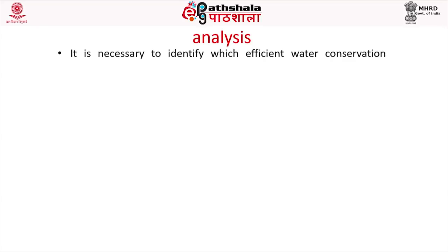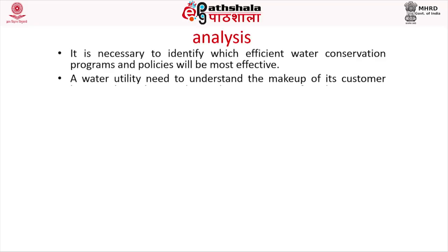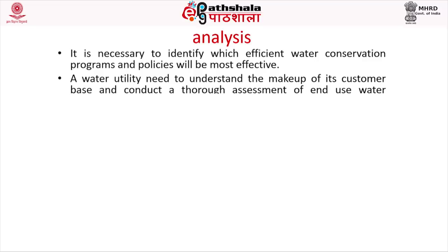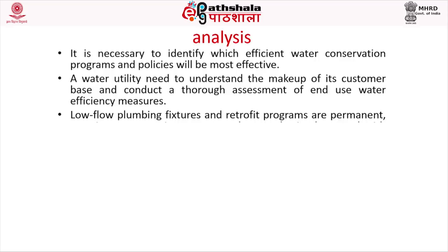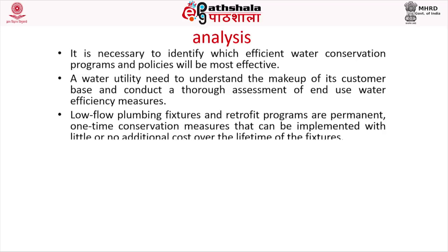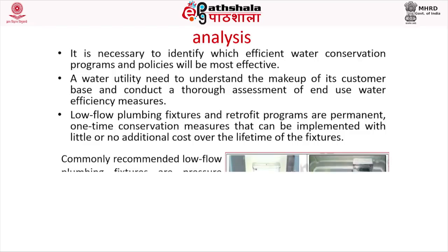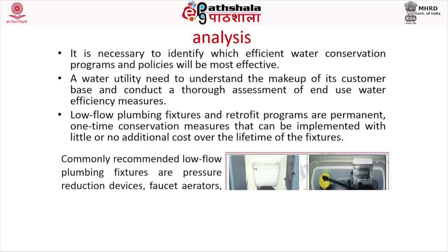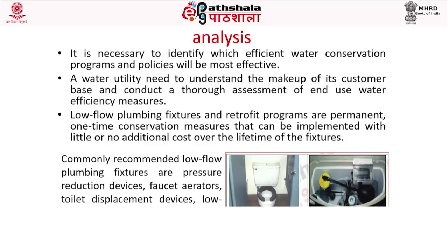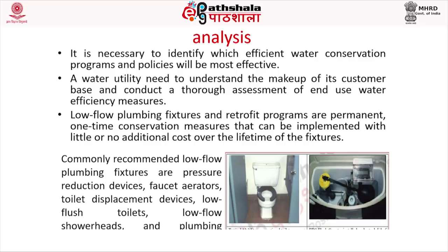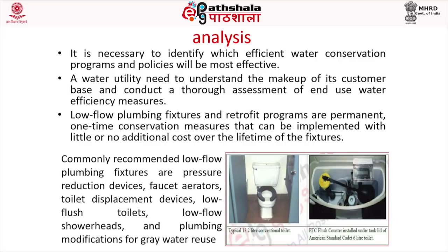For end use water conservation and efficiency analysis, it is necessary to identify which water conservation programs and policies will be most effective. A water utility needs to understand its customer base and conduct a thorough assessment of end use water efficiency measures. Low flow plumbing fixtures are permanent one-time conservation measures. Commonly recommended low flow fixtures include pressure reduction devices, faucet aerators, toilet displacement devices, low flush toilets, low flow shower heads, and plumbing modifications for grey water use.